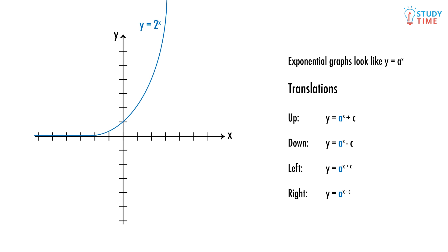If we moved y equals 2 to the power of x up by 2 units, we get y equals 2 to the power of x plus 2. If we moved it to the left by 2 units, we'd get y equals 2 to the power of (x plus 2).